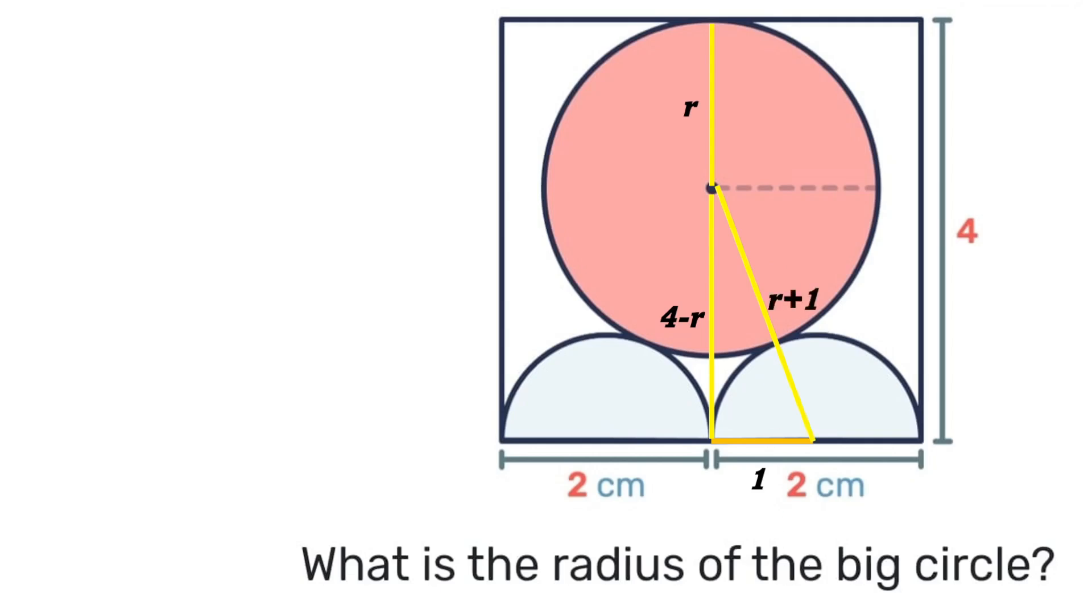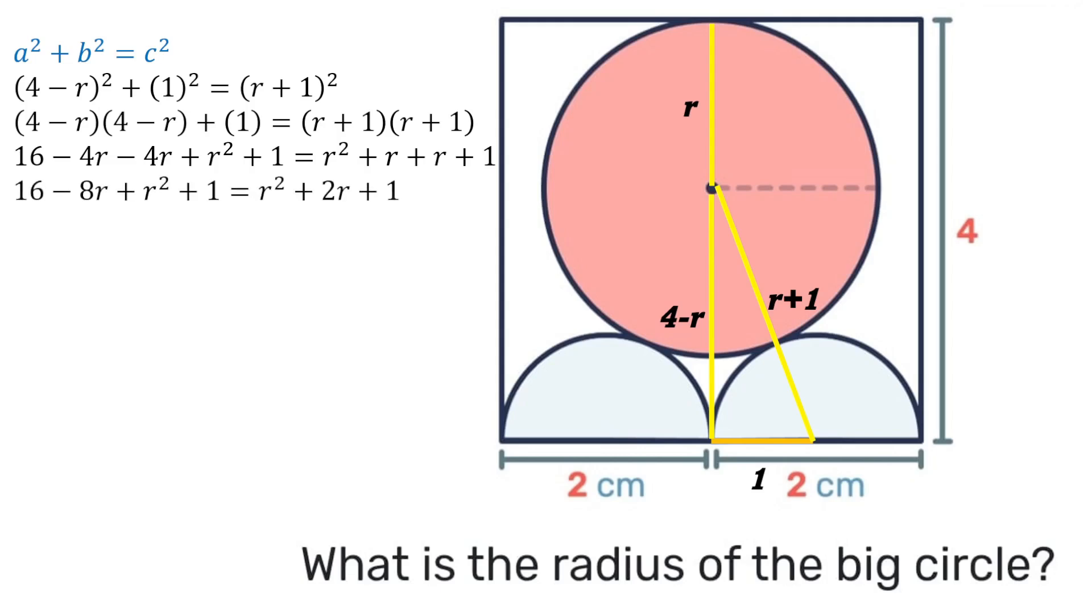We have a right-angle triangle, so we can use Pythagoras's theorem. We'll have (4-r)² + 1² = (r+1)². Expanding brackets, we'll have 4×4, which is 16, minus 4r minus 4r plus r² plus 1 equals r² plus r plus 1. Simplifying, we'll have 16 - 8r + r² + 1 = r² + 2r + 1.